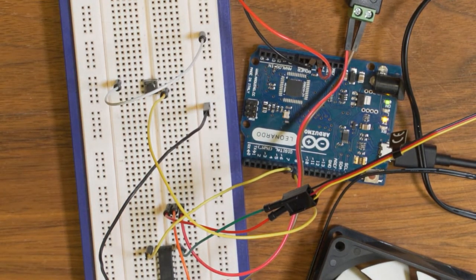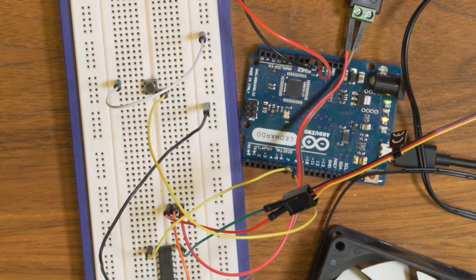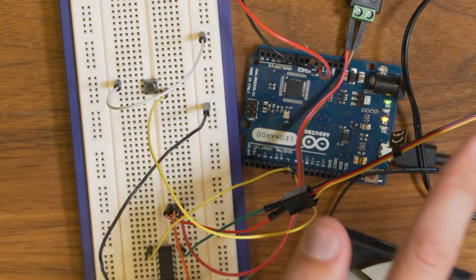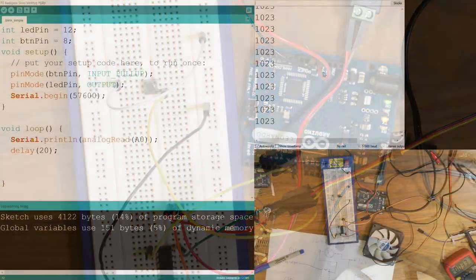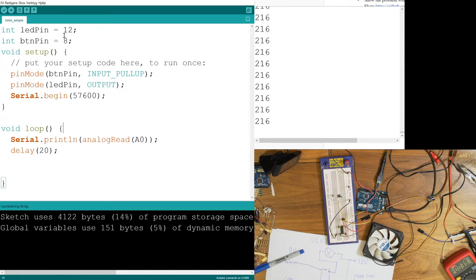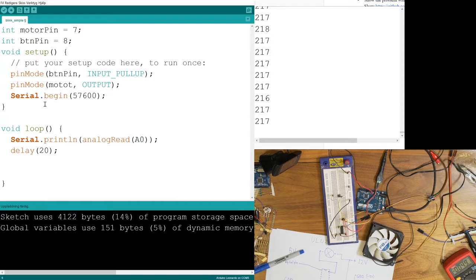So, the button is on pin 8 and the motor is on pin 7. Then I can actually go ahead and write a program. Let's check that out. I will rename this one to be motor pin. And I think I put it on 7. Yes. And the button pin is on 8. So, that's good. Perfect.